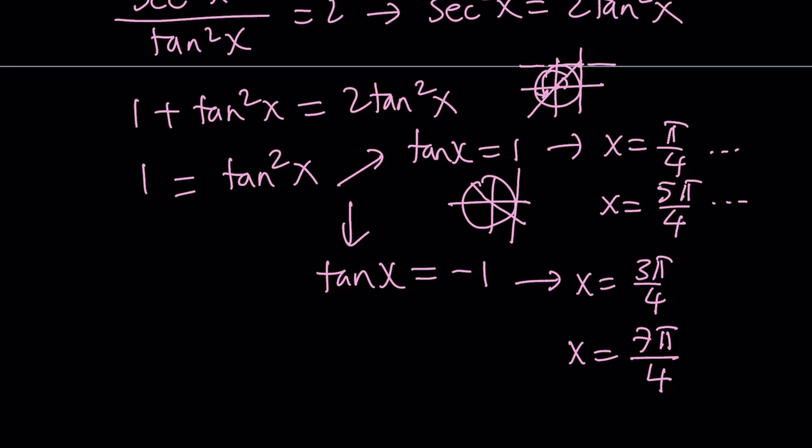Alright, so this looks great, but here's the problem. We squared both sides, so we introduced some extraneous solutions. So we need to check them. And how do we check them? There's actually an easy way to check it.